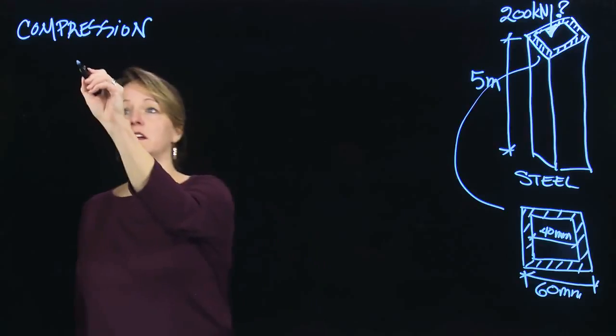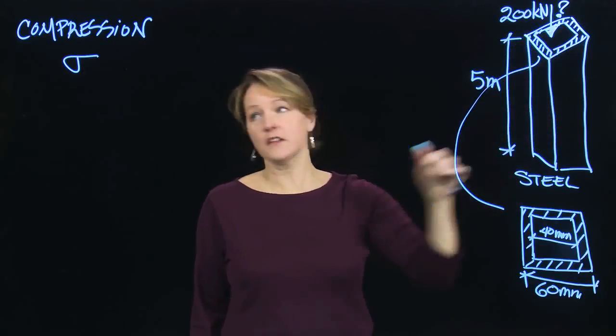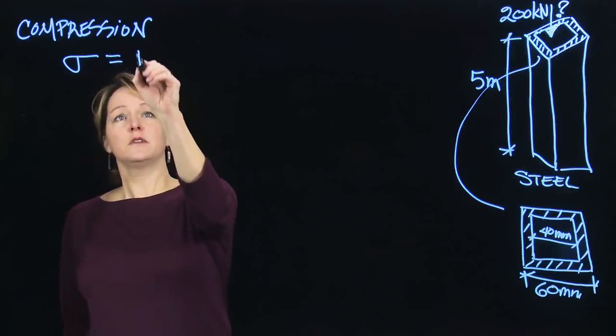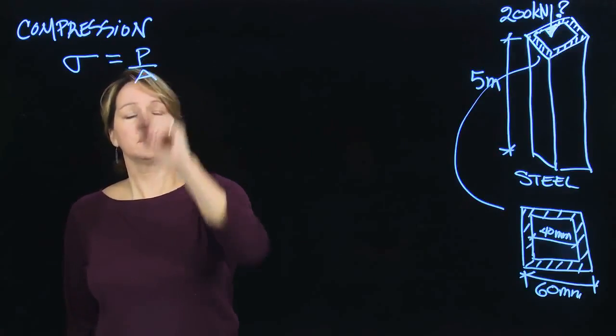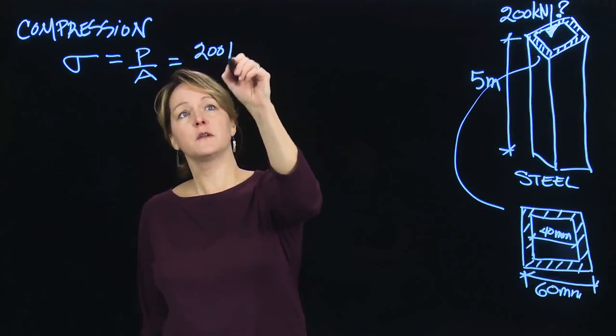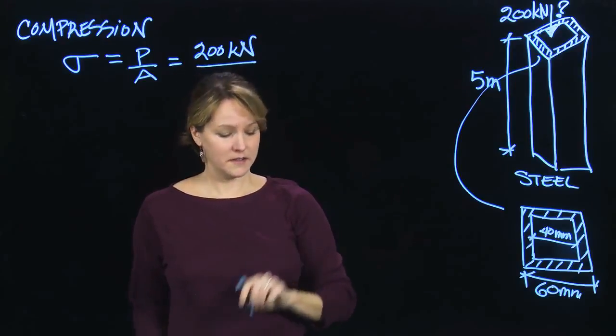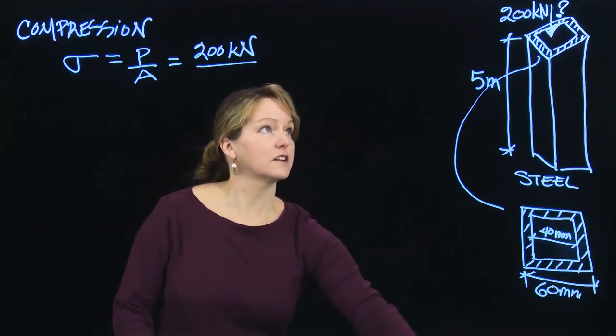So if I want to calculate the stress, this compressive force is going to cause an internal stress as we get down the column, and that equals force over area. Fairly straightforward. So I take that force. We know the force is 200 kilonewtons, so that's what I want to try. And I'm going to divide by the cross-sectional area.